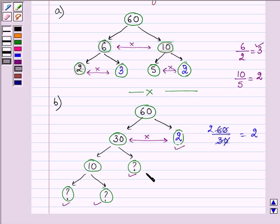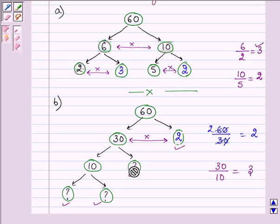Proceeding with the next one, 30 should get divided by 10 to find the missing number, and that comes out to be 3. So this blank will be filled up by the number 3.